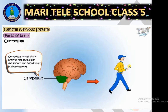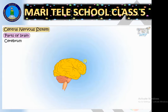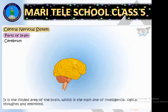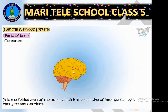The cerebellum controls our posture and helps us walk smoothly and in a balanced way. Now, the cerebrum is the largest part of our brain. It is the topmost part of the brain and is vertically divided into two halves.